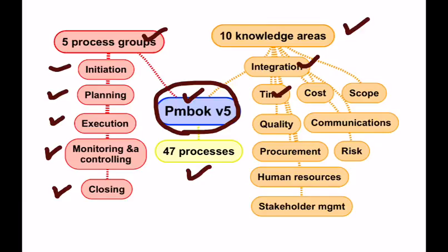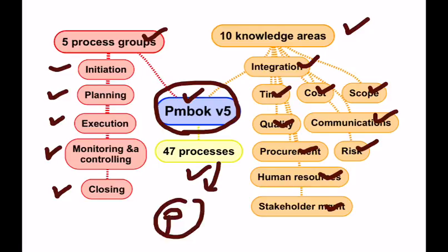...Time, Cost, Scope, Quality, Communications, Procurement, Risk, Human Resources, and Stakeholder Management. That means every process of these 47 processes is linked to one of the process groups and one of the knowledge areas.